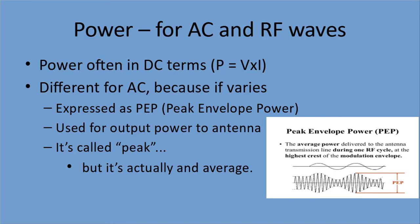Power — we need to generate it. We're generating alternating current and RF waves, RF being radio frequency. We're normally used to power being expressed in simple terms of DC, where power equals voltage times current. It's different for AC because it varies — we've got a wave — and so it's expressed as PEP, peak envelope power. That'll come up on the test, and when we're talking about PEP for ham radio, we're using it as a measure of the output power to the antenna.